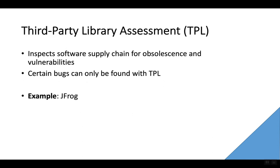Third-party library assessment might be considered another type of static assessment tool — a specific type that checks third-party libraries. In this space, we think of things like JFrog and Nexus, where the system keeps track of the third-party library versions and the known vulnerabilities within those versions. By monitoring the software supply chain, these tools can alert developers about any libraries being integrated into the project which have known security issues, and they can also recommend an alternative library — usually a newer version — that has patched these issues.